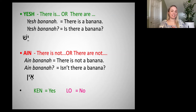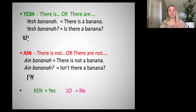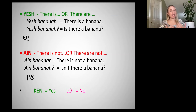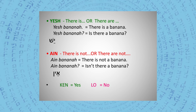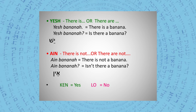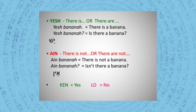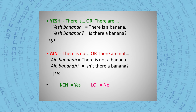These are different, but kind of similar to the words for yes and no. Ken means yes, and lo means no. And that might be the answer that you get. If you ask somebody 'yesh banana?' they might either say 'ken, yesh banana,' or 'lo, ain banana.'